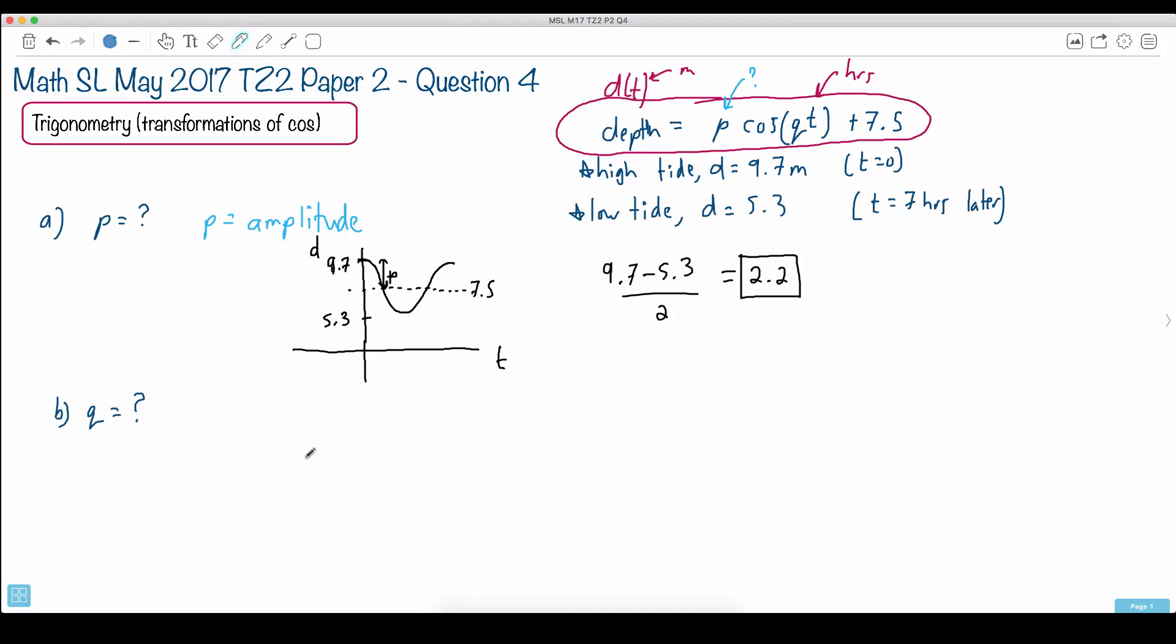In part B, now we're asking for Q. Remember, we just found what P was. So if we want Q, we have to recognize from these transformations again, what does that mean? What's Q? Now, that's what we're looking for.